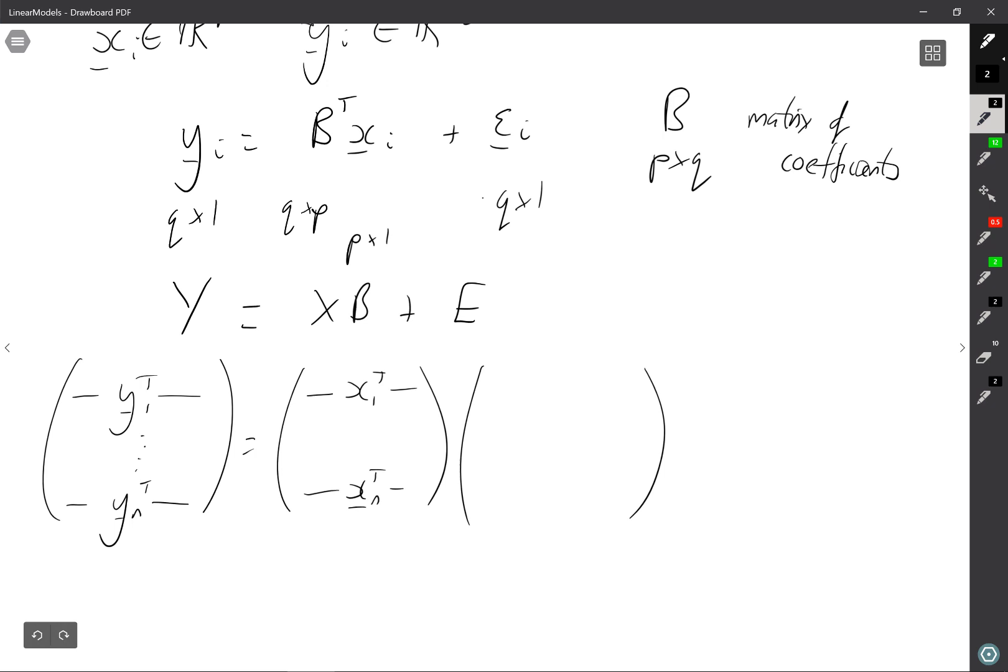Now the B, we can think about this as, let's write this in terms of columns. So let's have the first column be beta 1, beta 2, down to beta q. We need q of them if there's q outputs. The error term is just going to be epsilon 1,1 down to epsilon 1,q, epsilon n,1 down to epsilon n,q.